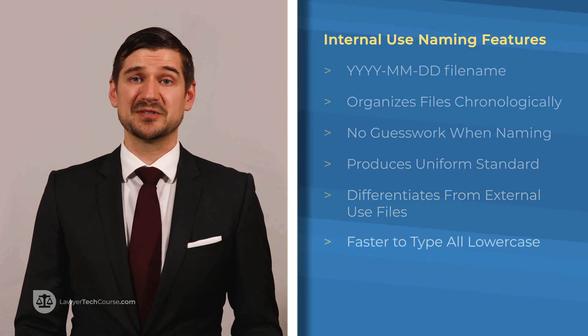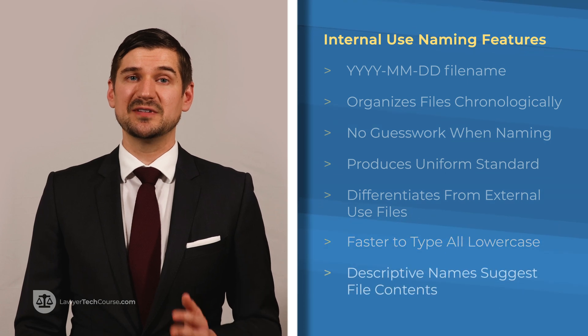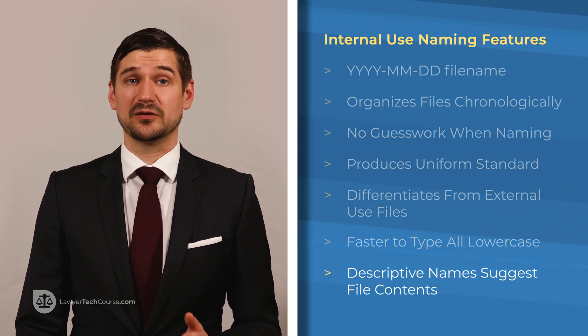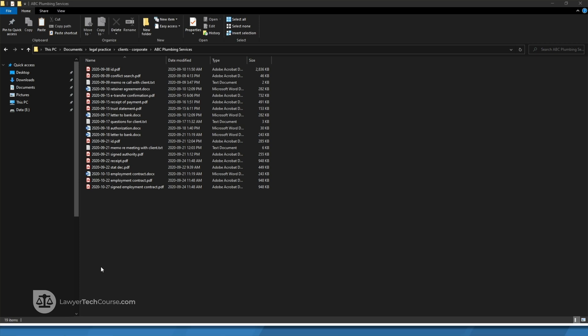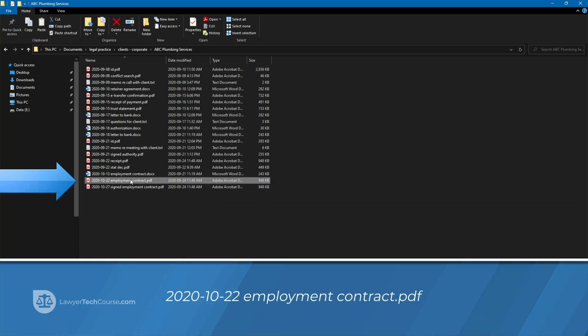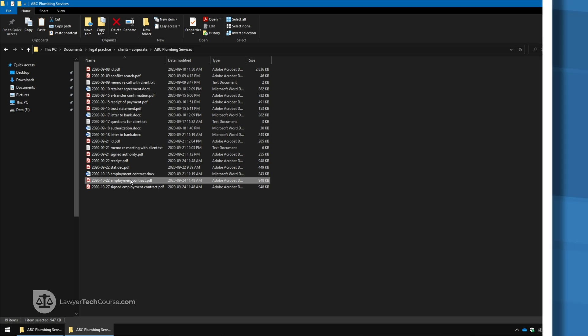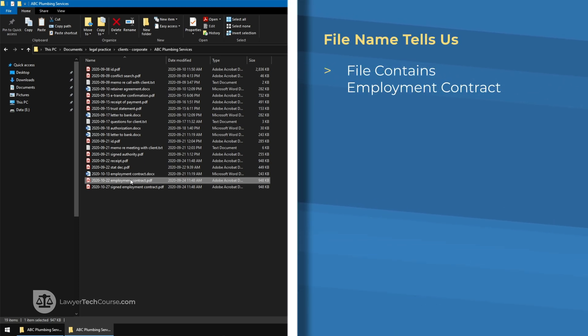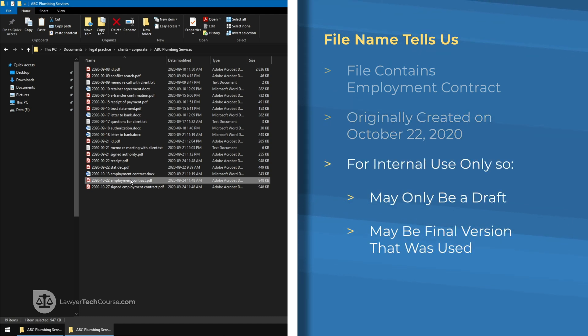Further, lowercase names can be typed faster than mixed case or all caps names and the descriptive names suggest file contents on their face. For example, just by looking at the name of this file 2020-10-22 employment contract, I know that this file contains an employment contract that was originally created on October 22, 2020, and it's for internal use only, which means that it may be a draft or maybe the final version that was eventually used.